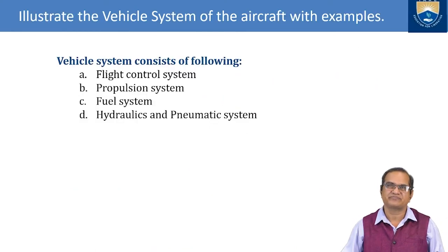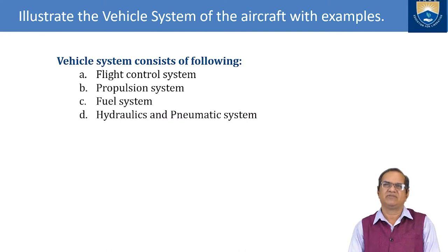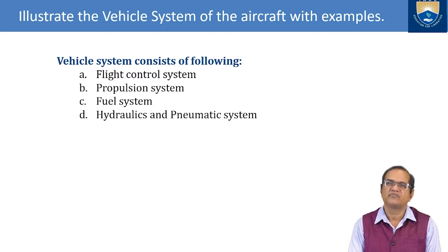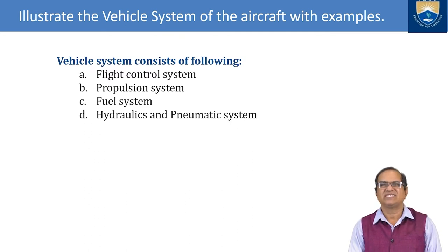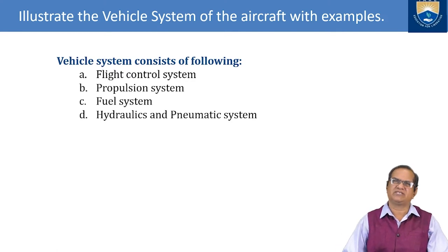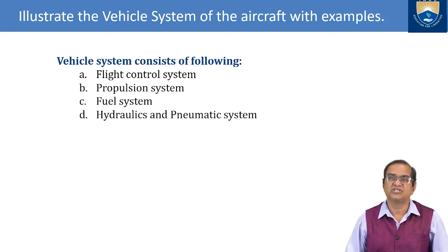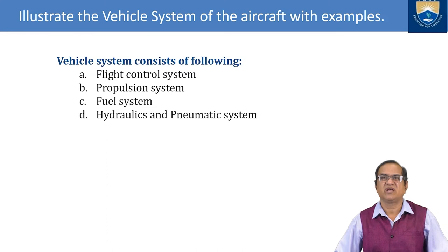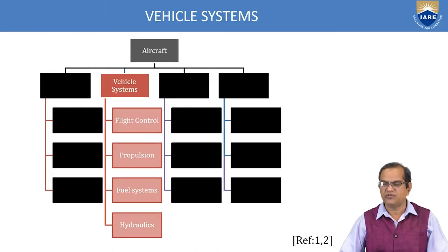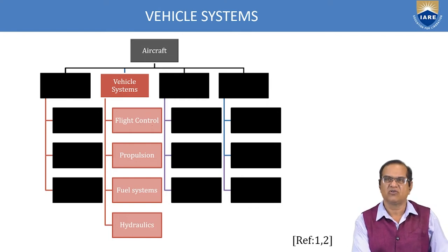The next question is: illustrate the vehicle system of the aircraft with examples. Vehicle systems can be divided into four main parts: the flight control system, propulsion system, fuel system, and the hydraulic and pneumatic system.